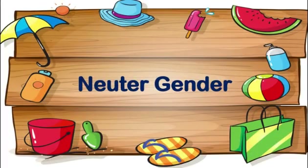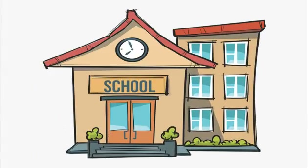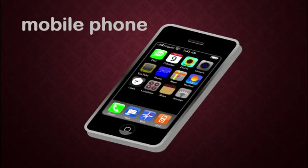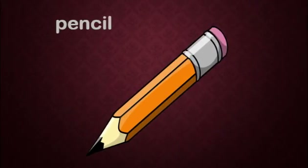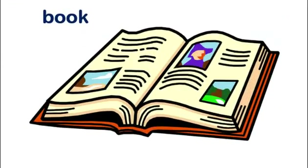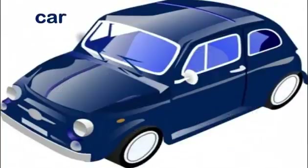Now last comes neuter gender. A noun that refers to non-living things is called neuter gender, like school, mobile phone, pencil, book, and car, etc.